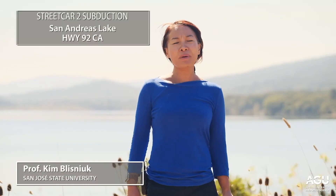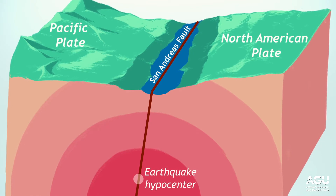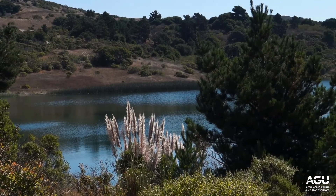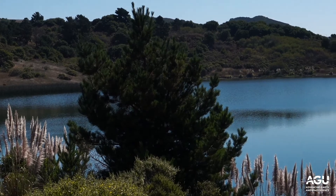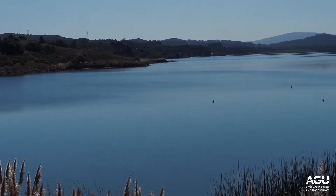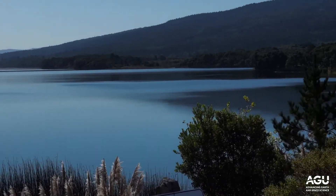The long linear lake behind me is San Andreas Lake. The San Andreas Lake is a linear valley, a geomorphic feature along the San Andreas Fault. Earthquakes along the fault have broken and crumbled rocks so that the land around the fault is easier to erode. Because it's easier to erode, you form the spectacular geomorphic feature of a linear valley.